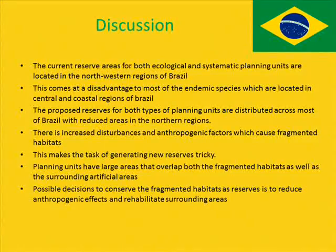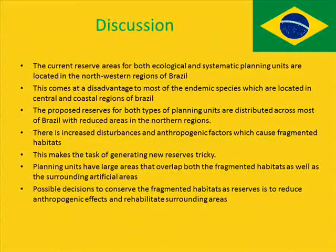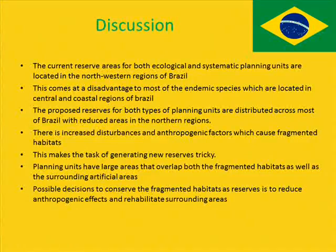This leaves limited decisions: either conserve these fragmented reserves which are host to endemic species, or carry on with land transformation and put these endemic species at risk. Possible decisions to conserve fragmented habitats as reserves include reducing anthropogenic effects and rehabilitating surrounding areas. However, this will reduce areas of artificial land and thus deprive the nation of agricultural land and area for development. Proposed reserves in the northern regions of Brazil have no direct anthropogenic factors, and their larger area makes them suitable as reserves, though only few endemic species are found there.